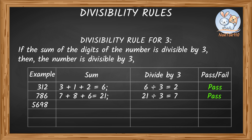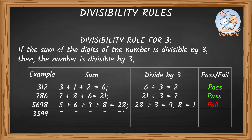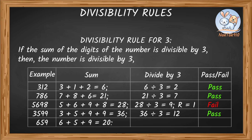For 5,698: 5 plus 6 plus 9 plus 8 equals 28. 28 divided by 3 has a remainder of 2, so the entire number is not divisible by 3.